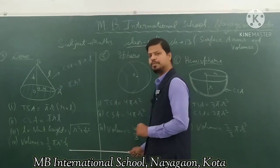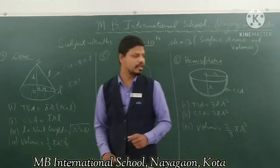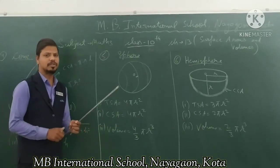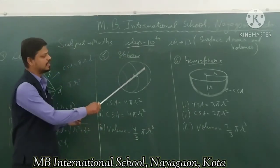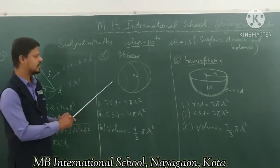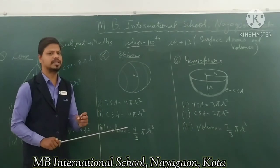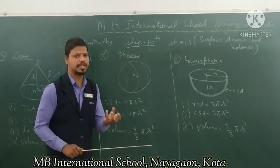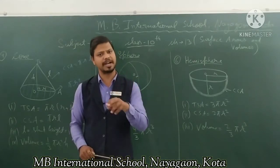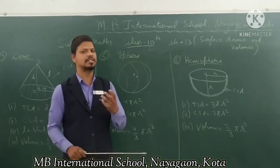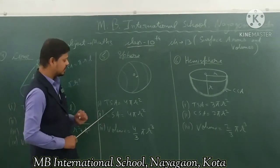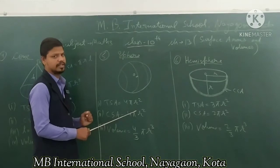After that we discuss sphere. A sphere is also a 3D figure — like a ball, a football. It is a 3D figure. The total surface area of a sphere is four pi r square.